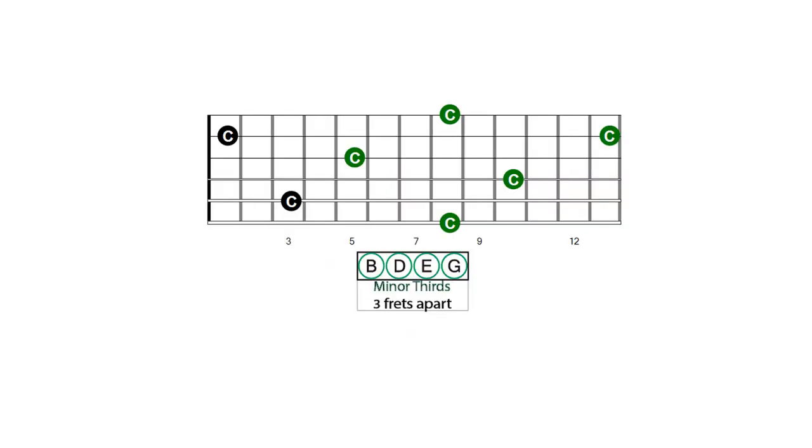The notes in the last two string pairs, B-D and E-G, are ascending thirds. This means that the identical root is three frets lower when moving from the B to D and E to G strings. When descending in thirds from D to B and G to E strings, the identical root is three frets higher.